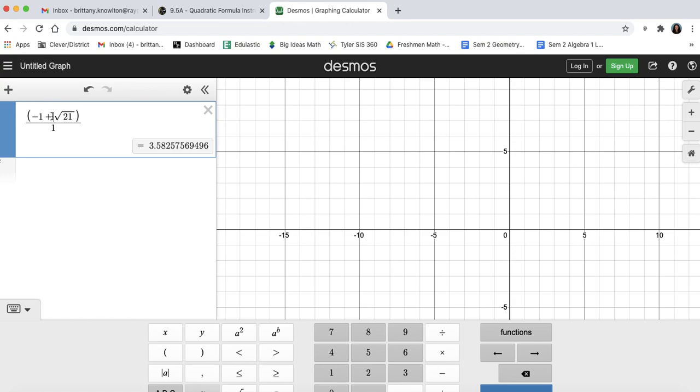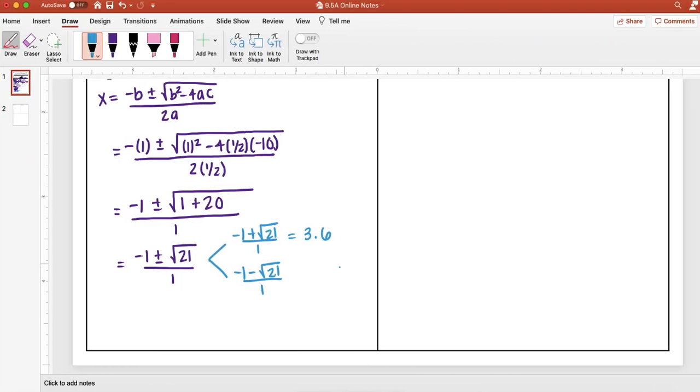And then I want to do also minus, so I'm just going to change that plus to minus. And rounding to the nearest tenth, I get negative 5.6. So my answer is here, x equals negative 5.6 and 3.6.